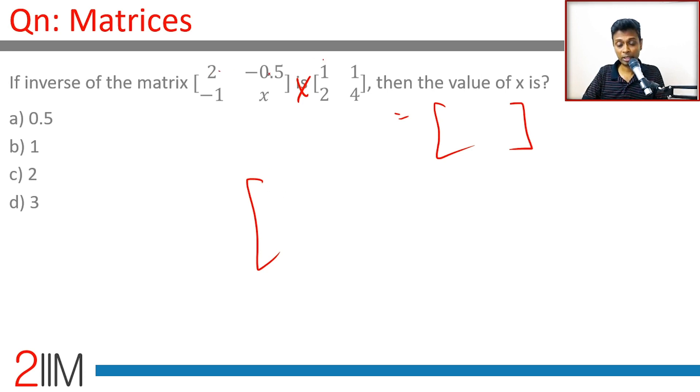2 into 1 minus 0.5 into 2. We are not interested in that, that will be 1, everything is found out. And the second one, the second row in first column, that should be this number.